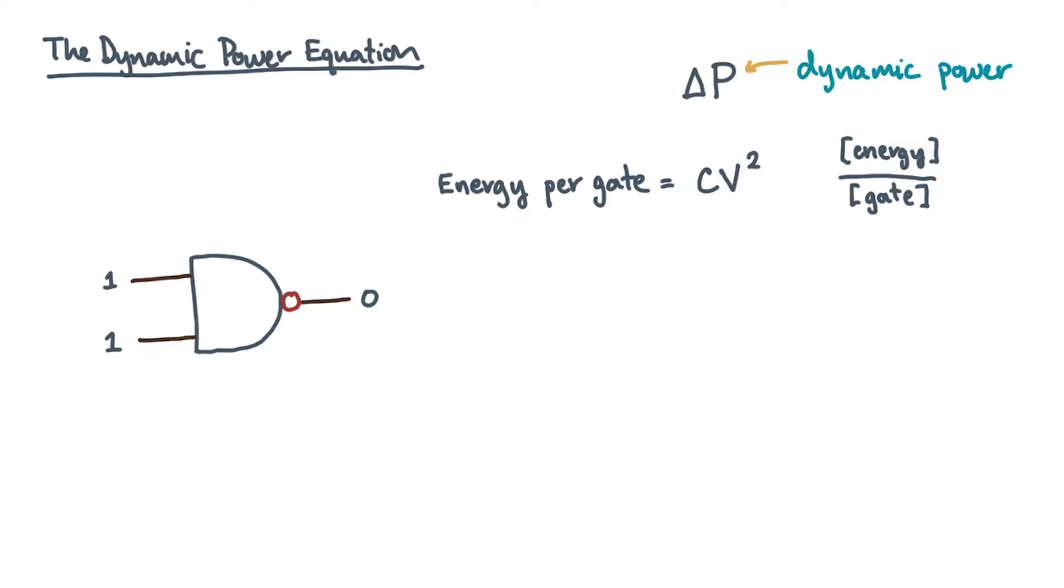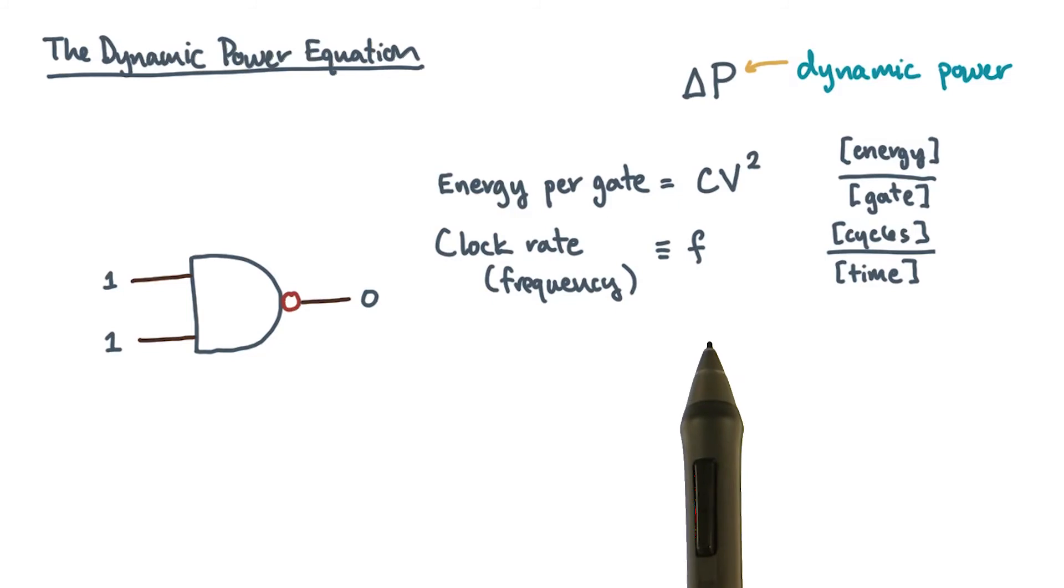So how often does switching happen? Well, there are two factors. The first is the frequency or clock rate of the circuit. It has units of cycles per unit time. The clock rate determines the maximum number of times that the circuit can switch or change states per unit time.